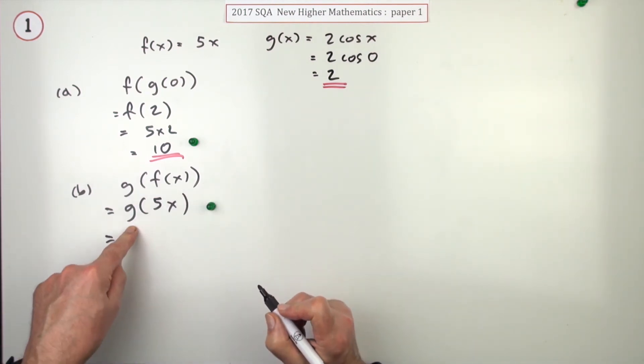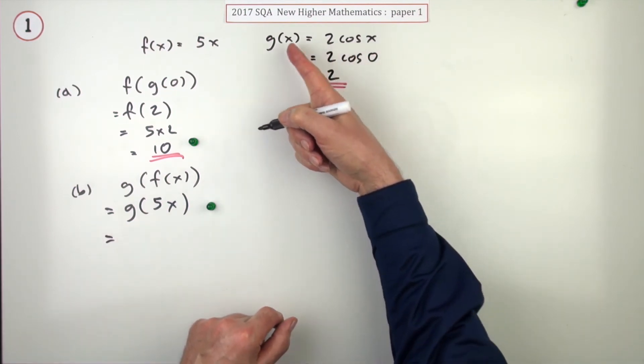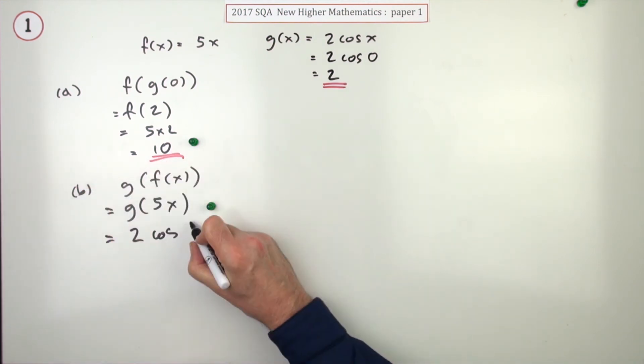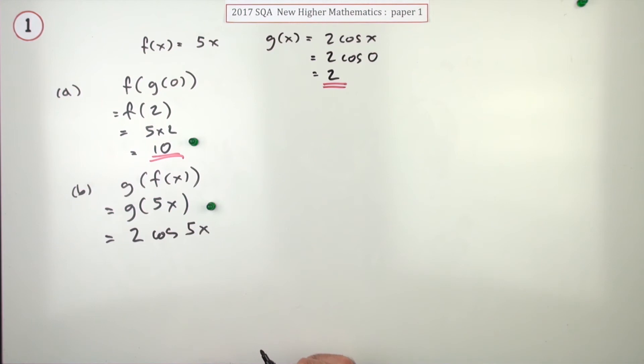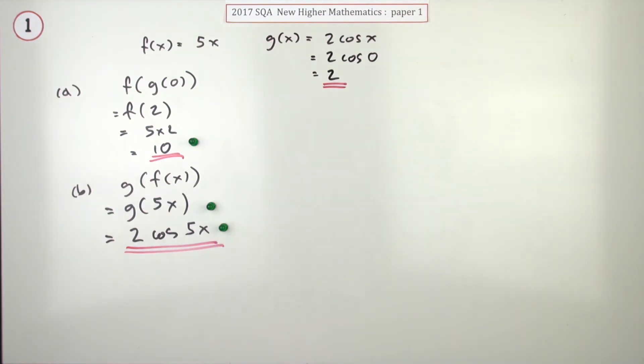And then doing what g does to anything it gets hold of, which is to do two cos of whatever you give it, that'll produce two cos. And you're feeding it in a 5x, put it in a bracket or not, that's the result. And that's the second mark.